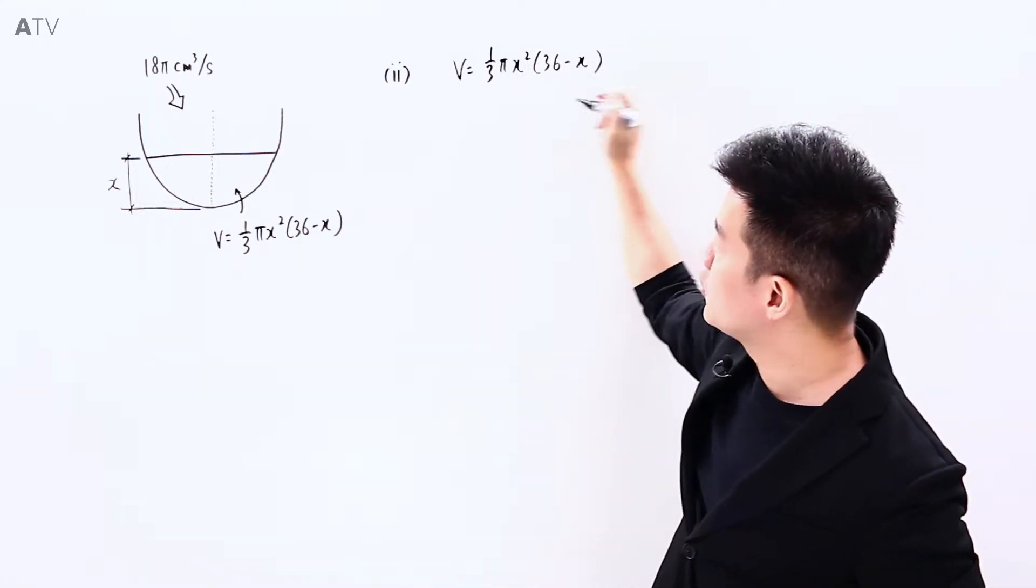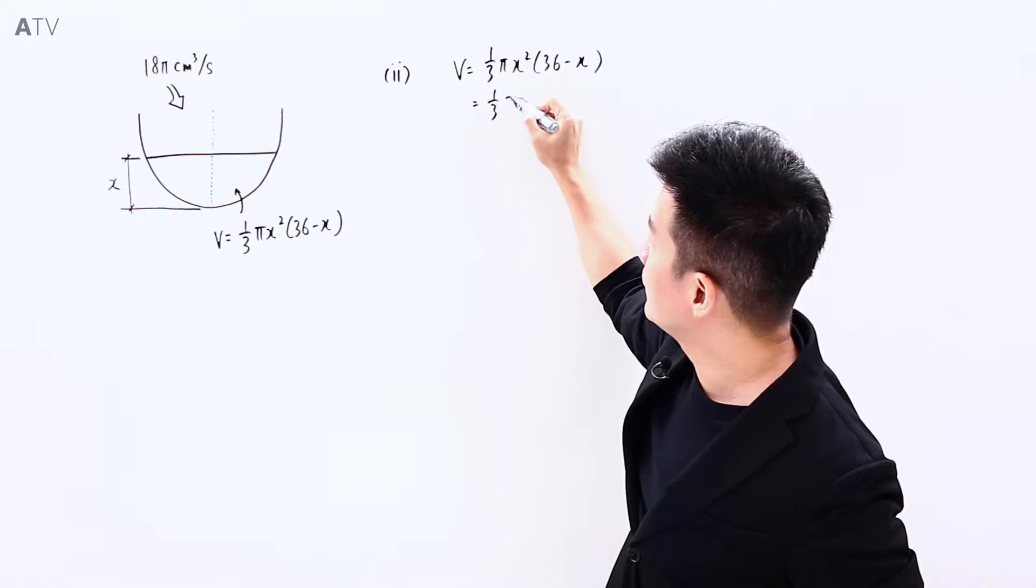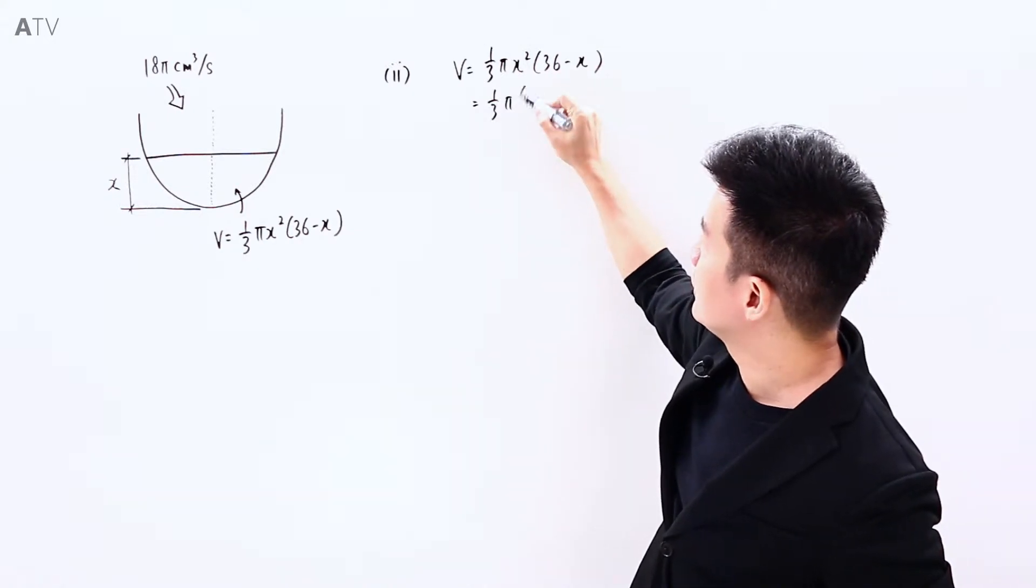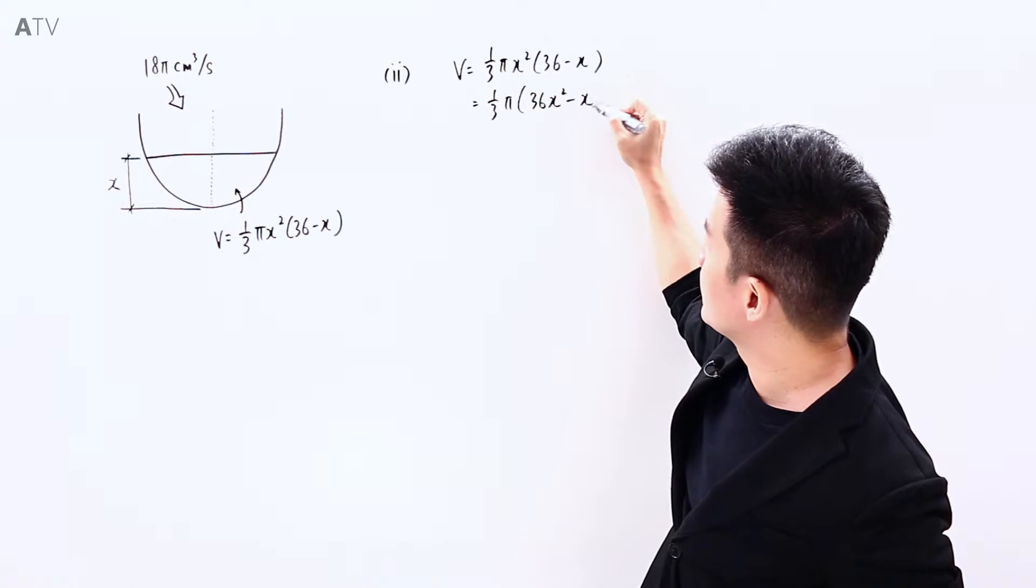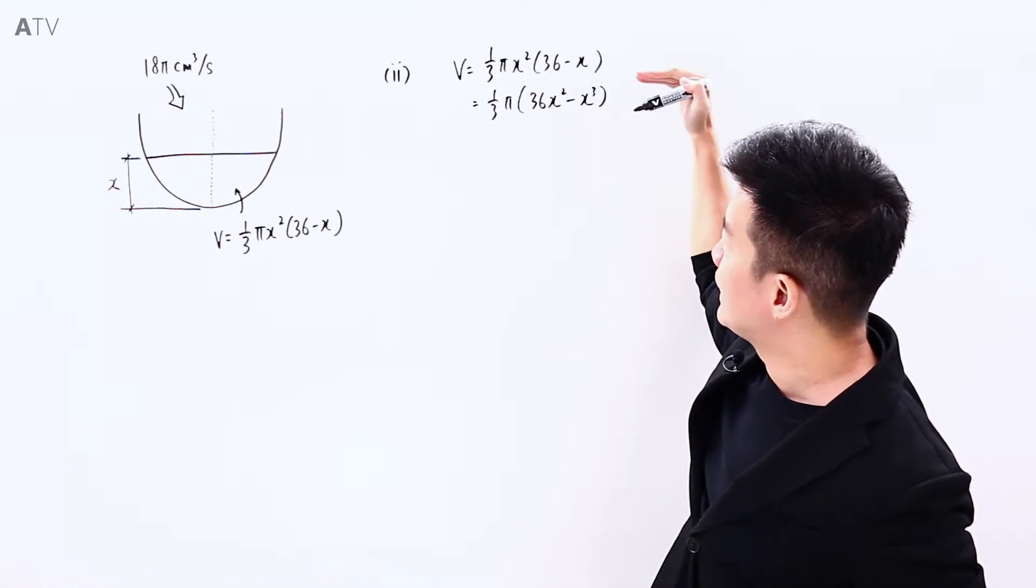So it will be (1/3)π(36x² - x³), which makes dV/dx way easier to differentiate going for this expression as compared to this. So now dV/dx is going to be...